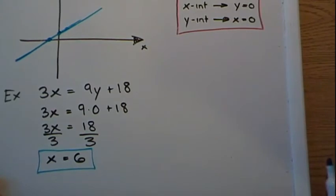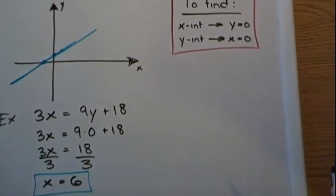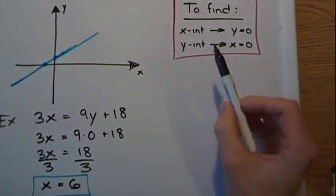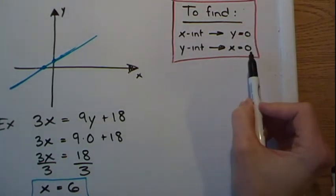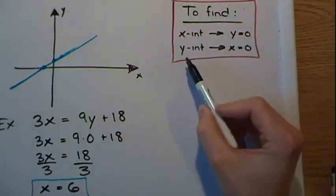So let's solve for the y intercept. So we do the same thing, but instead of replacing the y by zero, we replace the x by zero and now solve for y.